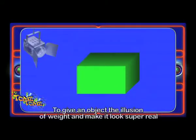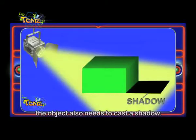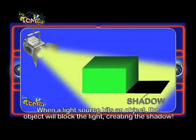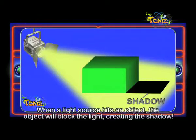To give an object the illusion of weight and make it look super real, the object also needs to cast a shadow. When the light source hits the object, the object will block the light, creating the shadow.